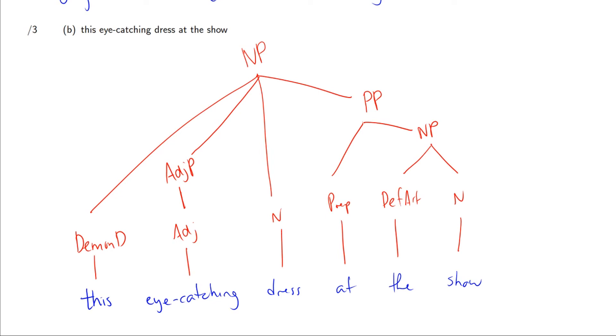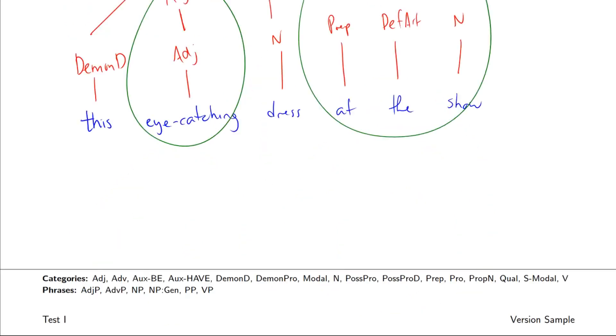Both eye-catching and at the show here are different forms of modifiers, and this prepositional phrase modifier is something that we haven't quite seen yet, but hopefully you're able to at least reason about to figure this out. I won't show you anything new on the actual test, but for the sample test, I think it's important to push you a little bit.